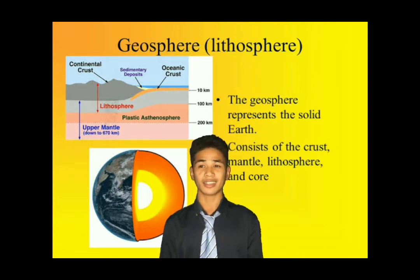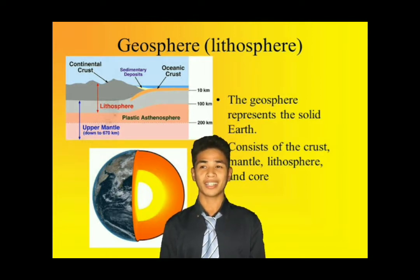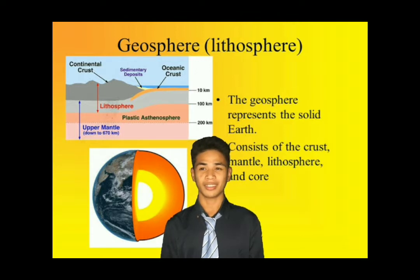Beneath that layer lies a very thin solid crust of oxygen and silicon. Next is a thick semi-solid mantle of oxygen, silicon, iron, and magnesium. Below that is a liquid outer core.